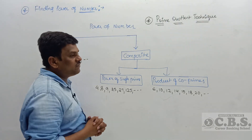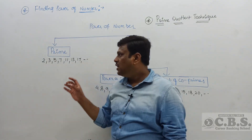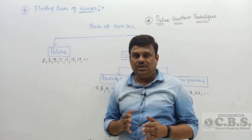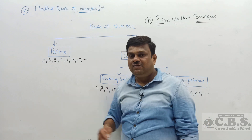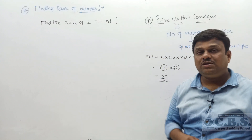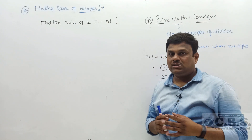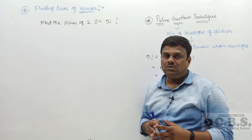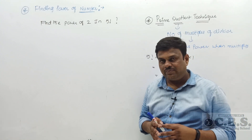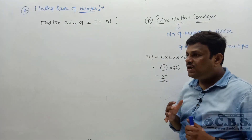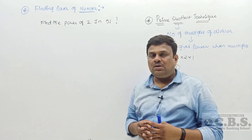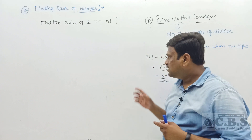Let us go to the first example for the prime model. In this method we use the prime quotient technique. Before understanding the prime quotient technique, you need to understand what a quotient is. Quotient means the number of multiples of the divisor from one up to the given range. Only the multiples of the divisor contribute to the power of that divisor.